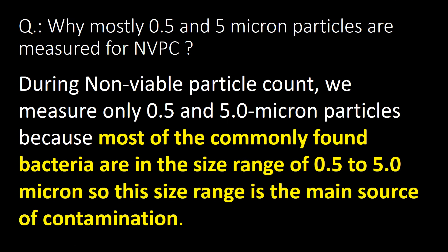Why are mostly 0.5 and 5 micron particles measured for NVPC? During non-viable particle count (NVPC), we measure only 0.5 and 5 micron particles because most of the commonly found bacteria are in the size range of 0.5 to 5 microns, so this range is the main source of contamination.